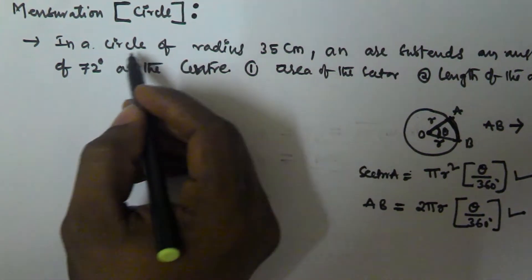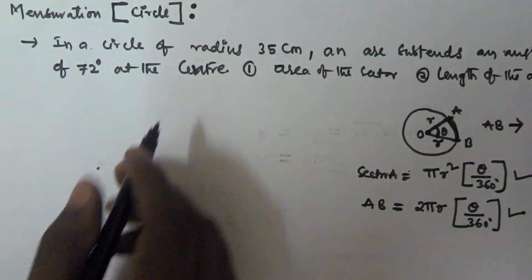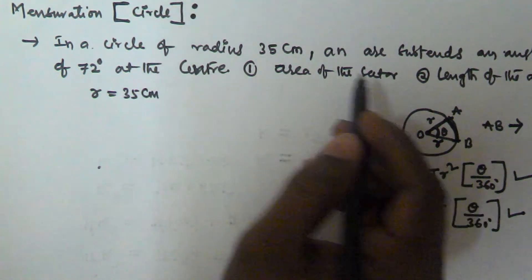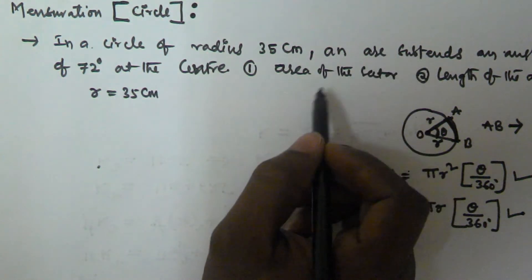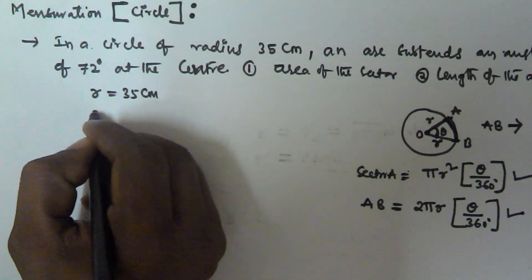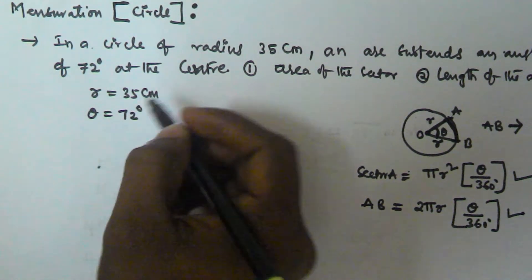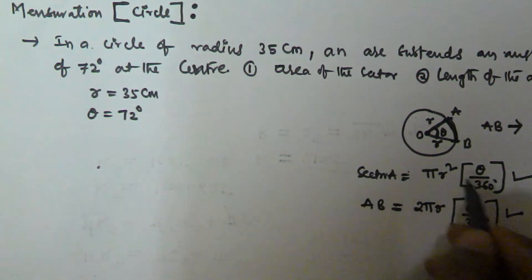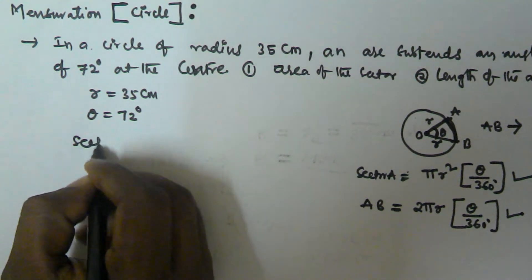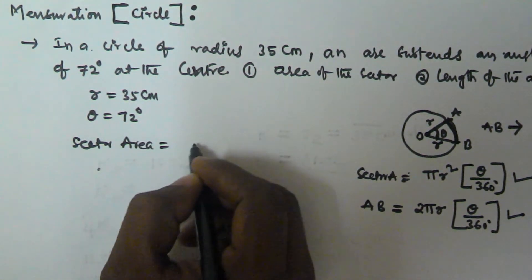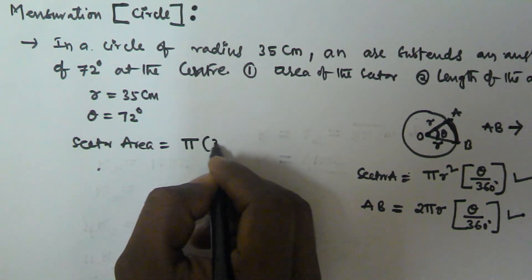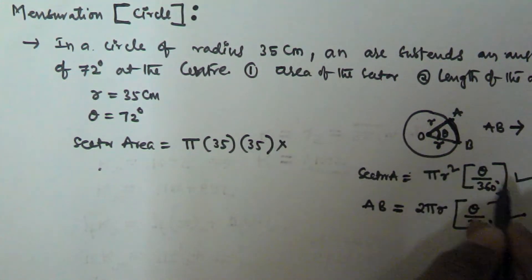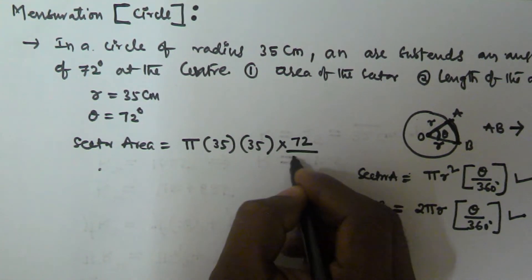The problem states a circle of radius 35 centimeters, so r = 35 cm, and the arc subtends an angle of 72 degrees, so θ = 72°. The area of the sector is given by πr² × θ/360, so sector area = π × 35² × 72/360.